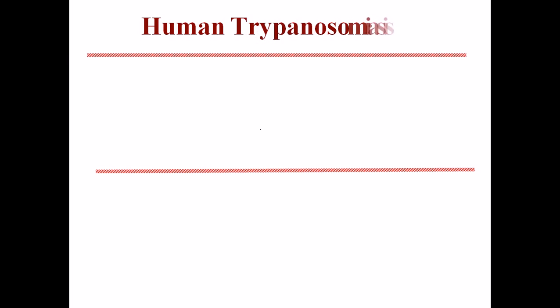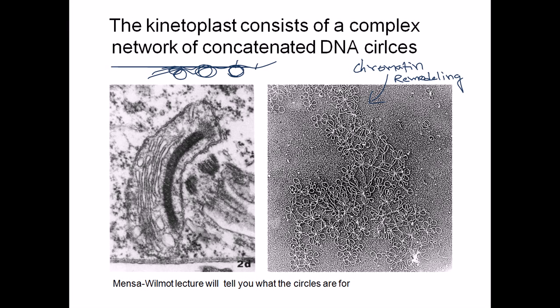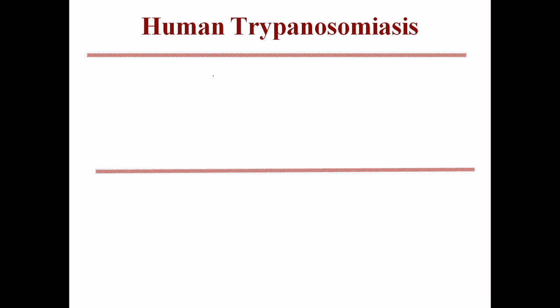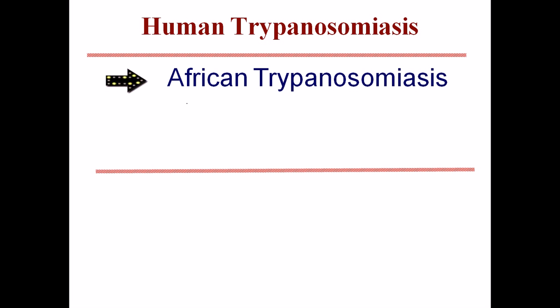Let's talk about human trypanosomiasis. We have already discussed the basic structures and components of this disease. Now we'll be talking about the different diseases caused by this particular trypanosoma. The diseases can be divided into two sections: African sleeping sickness and American sleeping sickness.